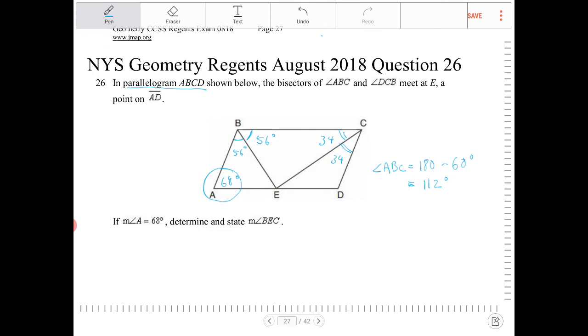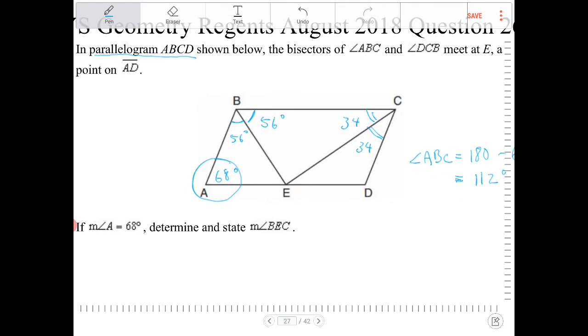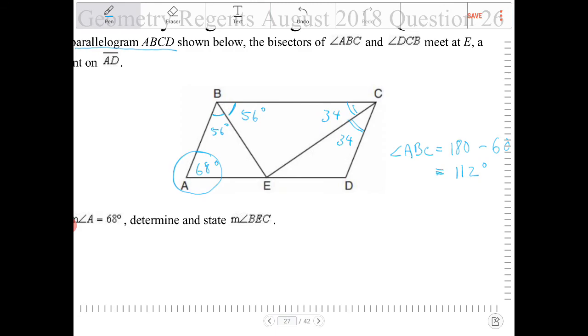All right, so we want to determine what is angle BEC. So since BEC forms a triangle, the three angles in a triangle should be supplementary.